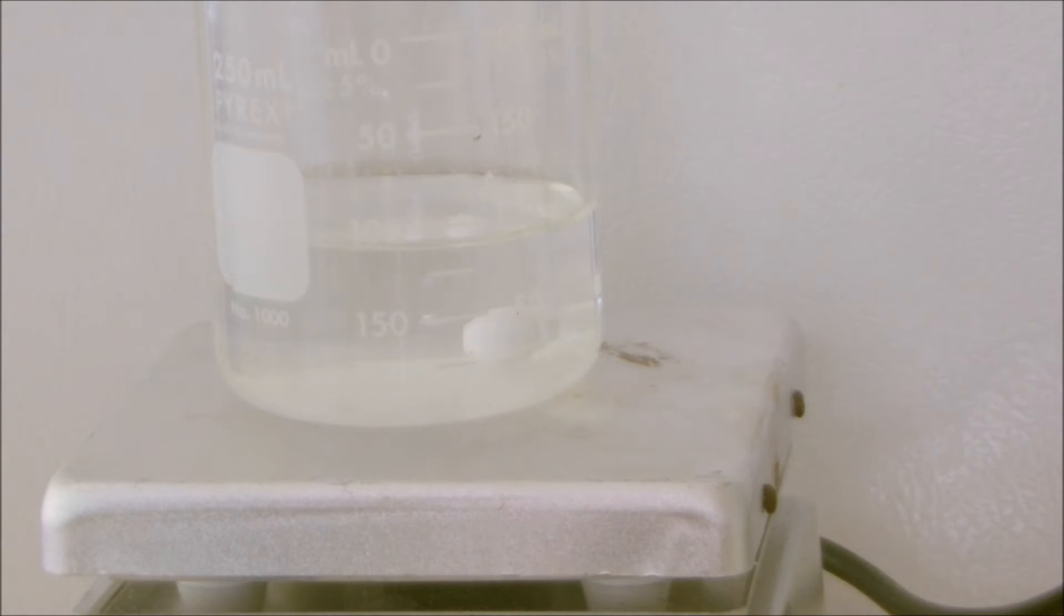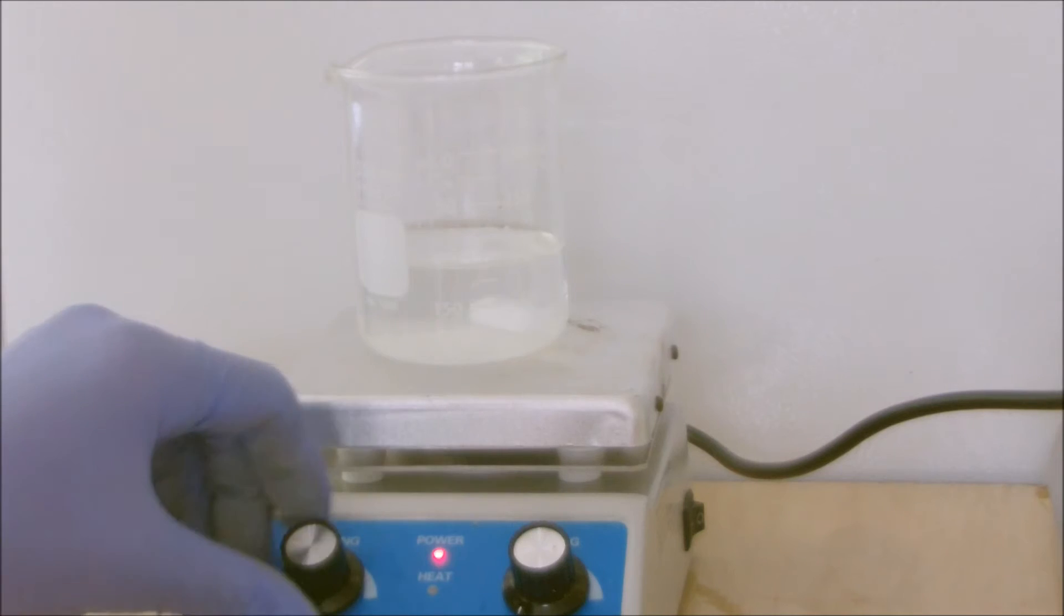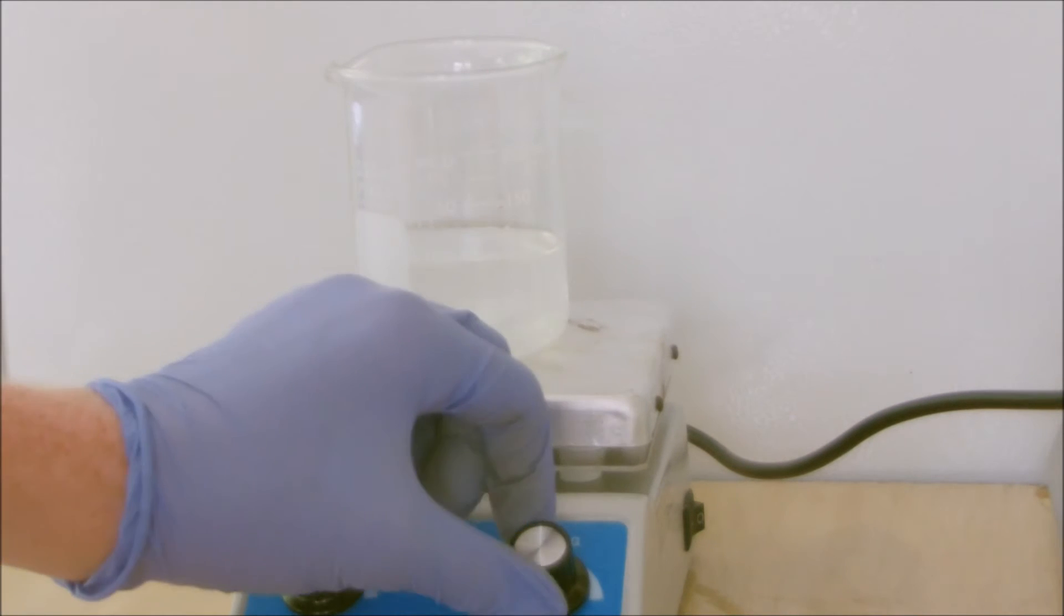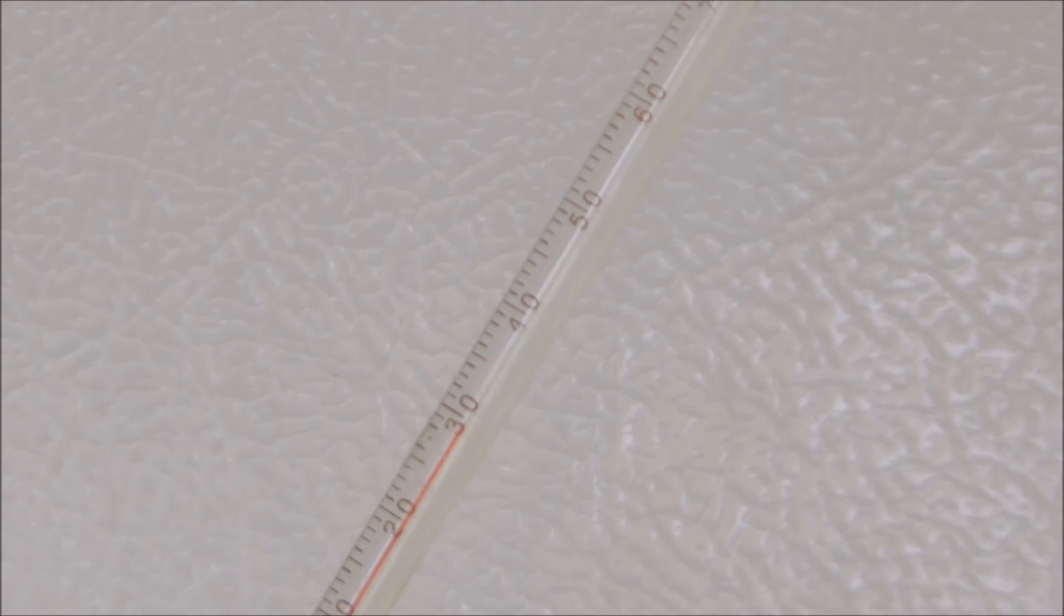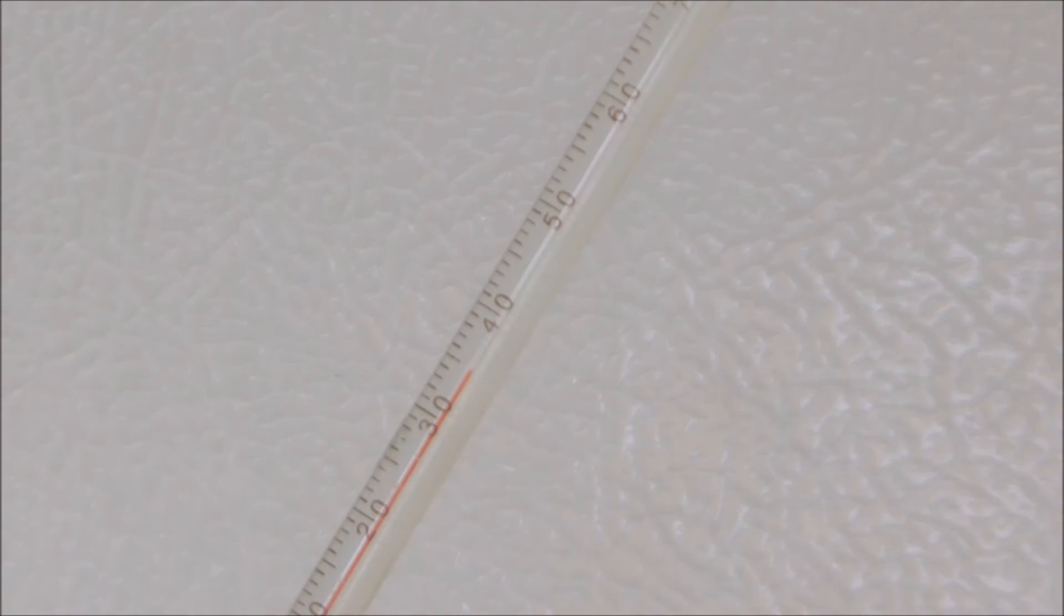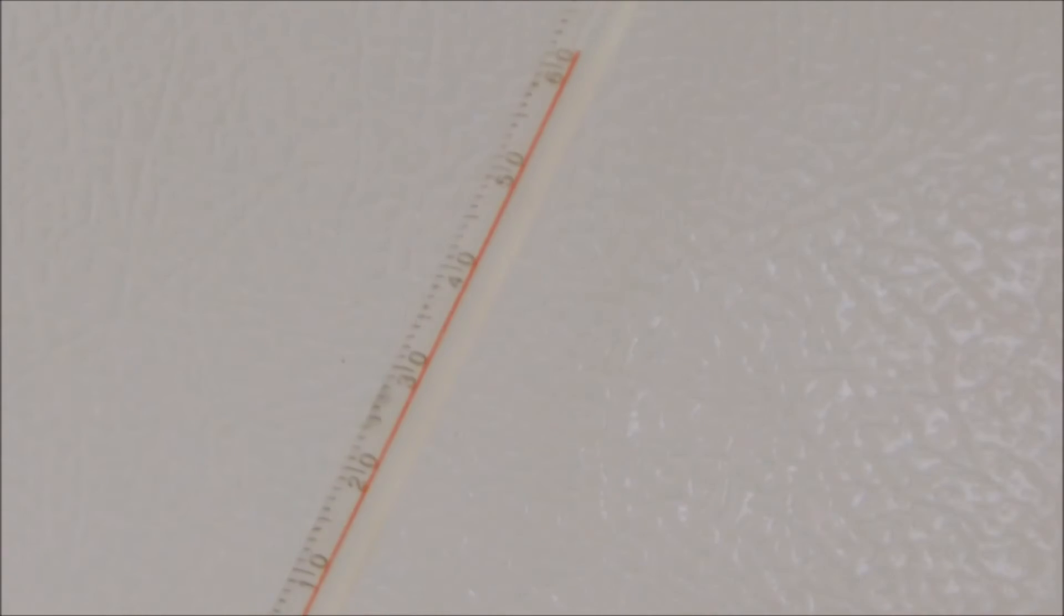So now we're going to heat up this solution to 50 degrees Celsius, and then add the hydrogen peroxide and the copper sulfate. Now that it's at temperature, we can add the hydrogen peroxide.